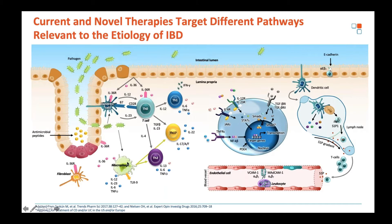In IBD, the innate immune response is thought to be slightly defective, allowing antigen-presenting cells such as dendritic cells to present bacterial antigen to naive T cells, which then differentiate into a range of effector phenotypes. In inflammatory bowel disease, the presence of IL-12 drives them towards TH1, while IL-23 and TGF-beta drive differentiation towards TH17, with a reduction in the generation of regulatory T cells.